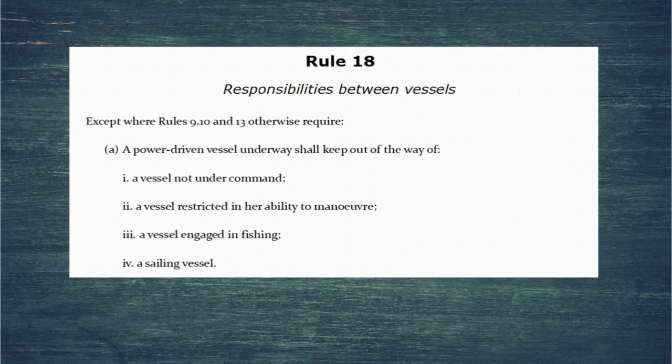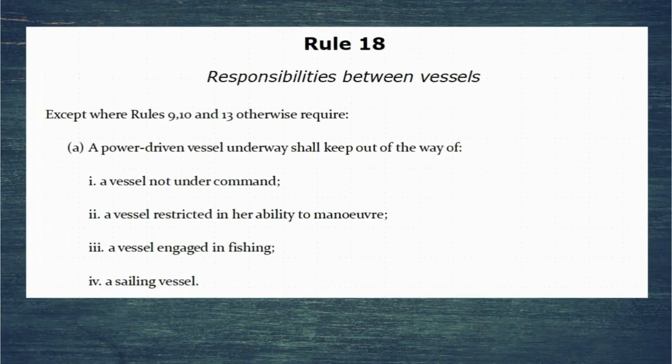Rule 18 establishes a hierarchy of vessels, saying that a power-driven vessel needs to keep out of the way of a great big list of others, and then it goes down putting them all in order. However, the very first sentence is a crucial one: except where rules 9, 10 and 13 otherwise require. Rule 9 being narrow channels, rule 10 being traffic separation schemes, and rule 13 being overtaking vessels.